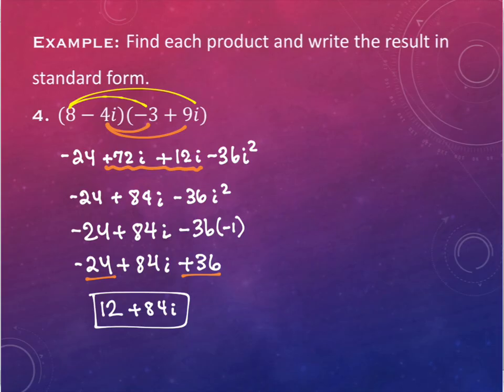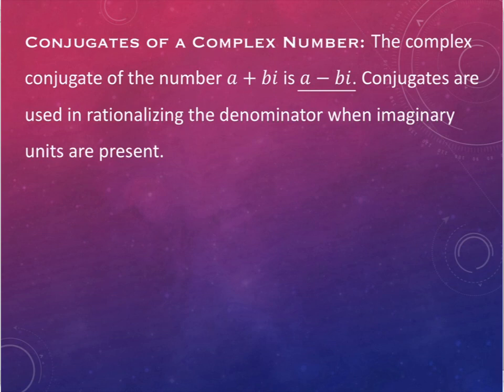So we've encountered addition and subtraction — same sort of process. Multiplication — which has this negative one component when i squared is happening. The last one is division. Division needs an additional term defined, and that term is a conjugate. The conjugate of a complex number a plus bi is a minus bi.